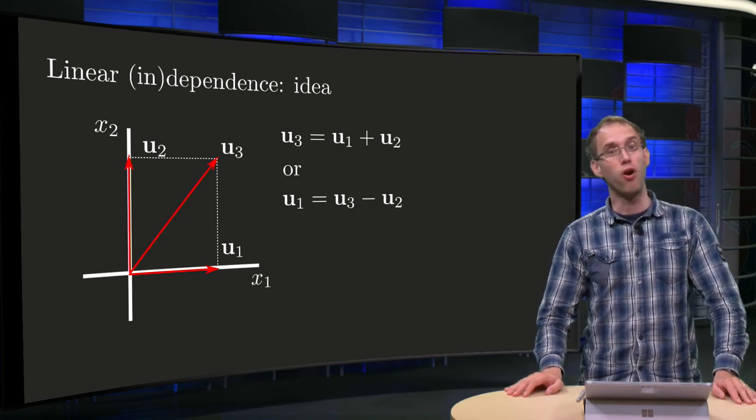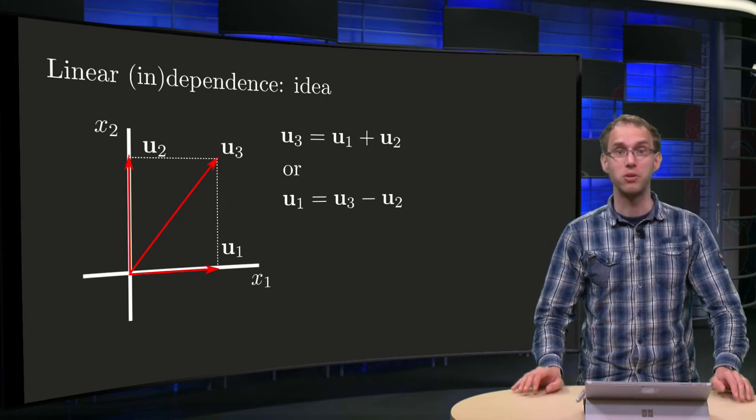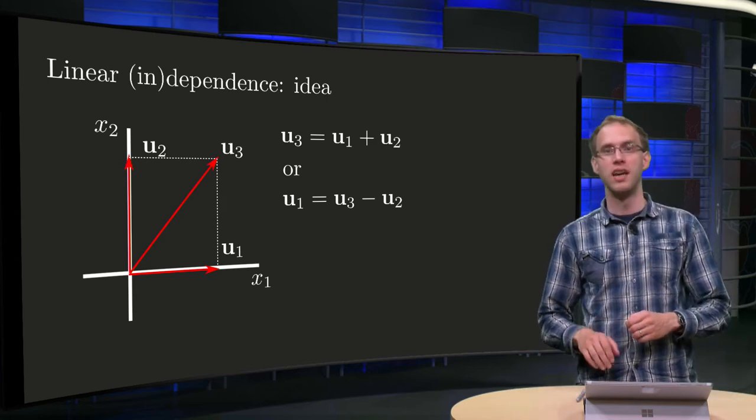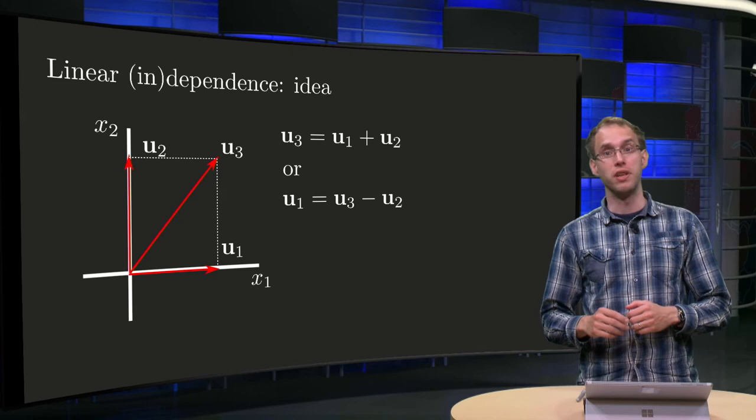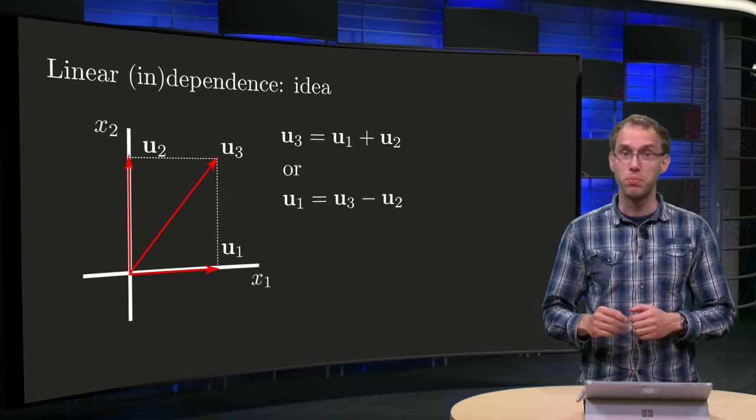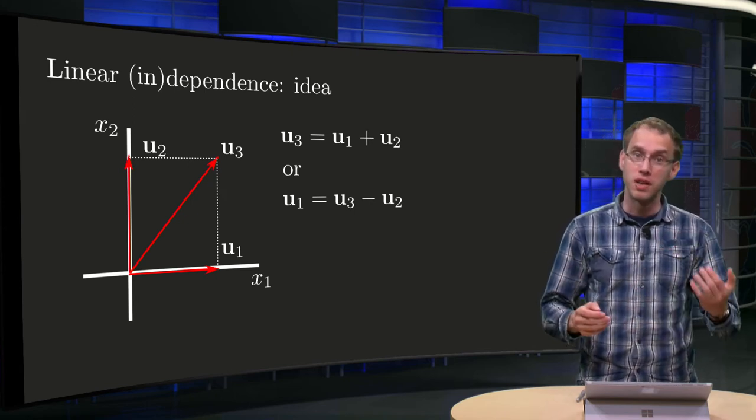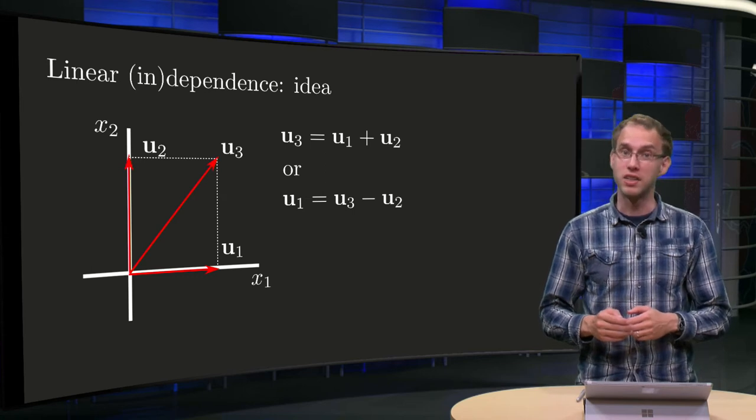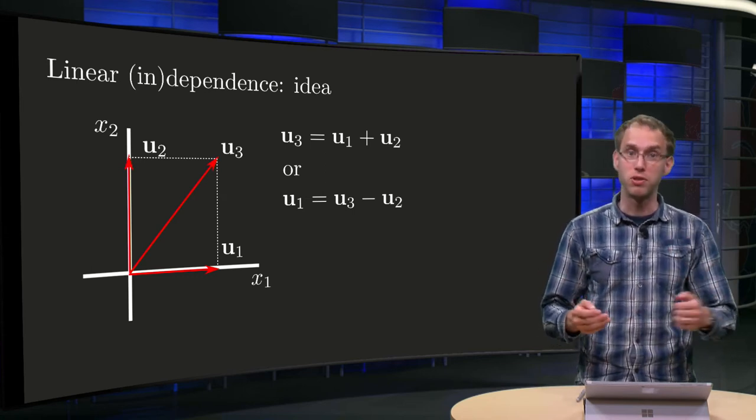In engineering you will often encounter formulas containing a lot of quantities. Take for example the equation of motion for a mass on a spring. Mass times acceleration equals minus k times displacement minus c times velocity.